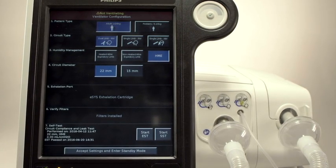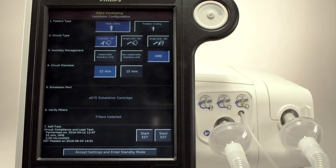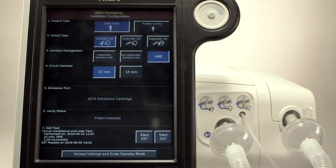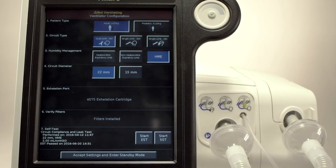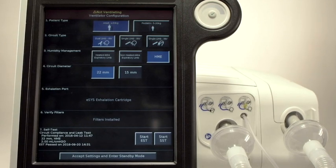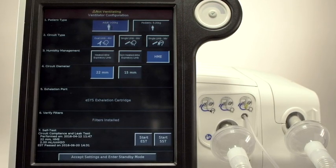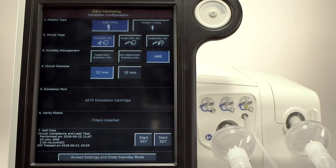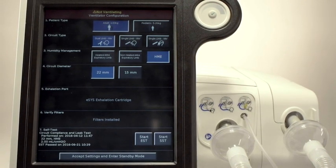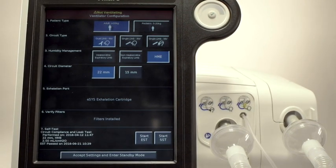You must be connected to a high-pressure oxygen source to perform the EST. The short version is recommended after each circuit change and does not require high-pressure oxygen to run. Since we are changing to a dual-limb circuit on the same patient, we don't have to run a new EST. However, we will want to select SST.